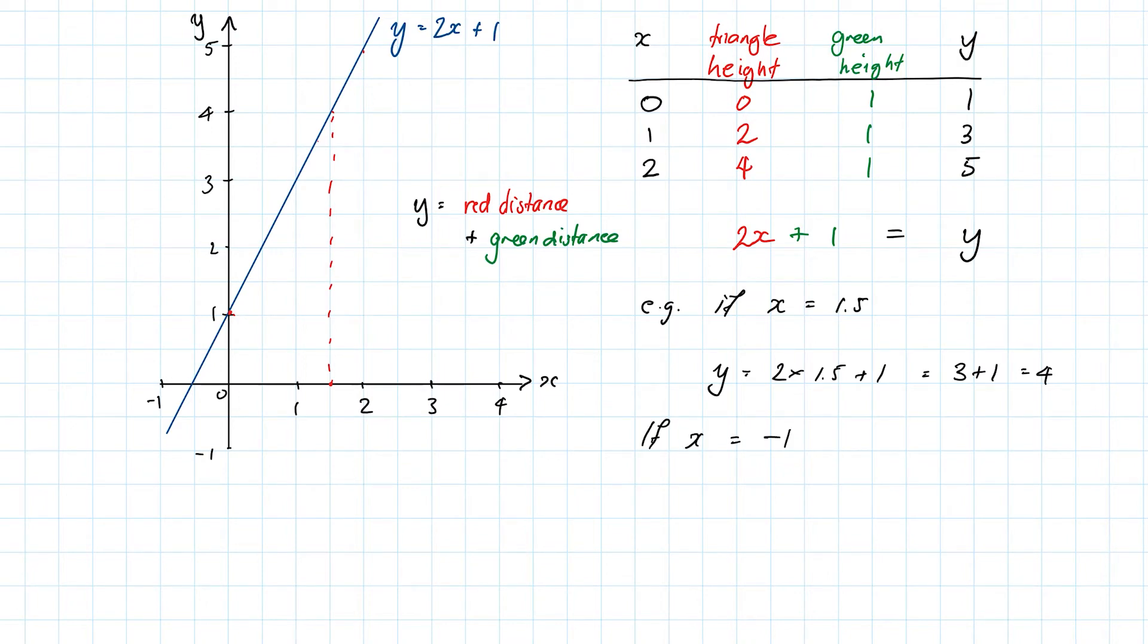Then if x is negative 1, our formula says that y will be 2 times negative 1 plus 1, which will be negative 1. These both look right on our graph, so it looks like we've cracked it.